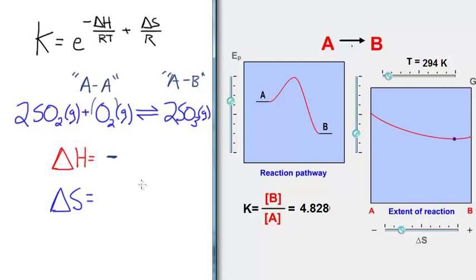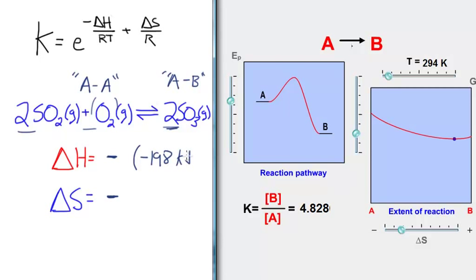How about delta S? The moles of gas in a reaction can be a dominant factor for the entropy change. In this case, we're going from 1 to 3 moles of gas to 2 moles of gas, using the coefficients to determine that. So that's a drop in moles of gas, and we would predict a drop in entropy. It turns out that calculating delta H and delta S using delta H of formation values and molar entropy values gives values that confirm these predictions. At 298 Kelvin, delta H is about −198 kilojoules approximately and delta S is around −0.188 kilojoules.